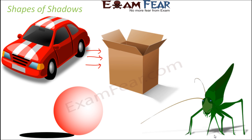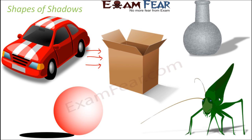Look at this grasshopper — when you look at its shadow, it is very much different from the real picture of the grasshopper. Shadow will only be that area where light is not able to reach. Think of this flower vase — you can get many different shapes of shadows of the same flower vase just by changing the direction of light falling on it. So depending on the direction from which light is incident on an object, it determines where the shadow will be formed and what the shape of the shadow will be.